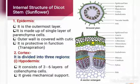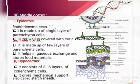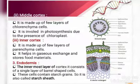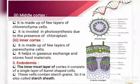Hypodermis is made up of parenchyma cells and involves in mechanical support. Middle cortex is made up of chlorenchyma cells and involves in photosynthesis. Inner cortex is made up of parenchyma cells and mainly involves in gaseous exchange as well as the storage of food materials.